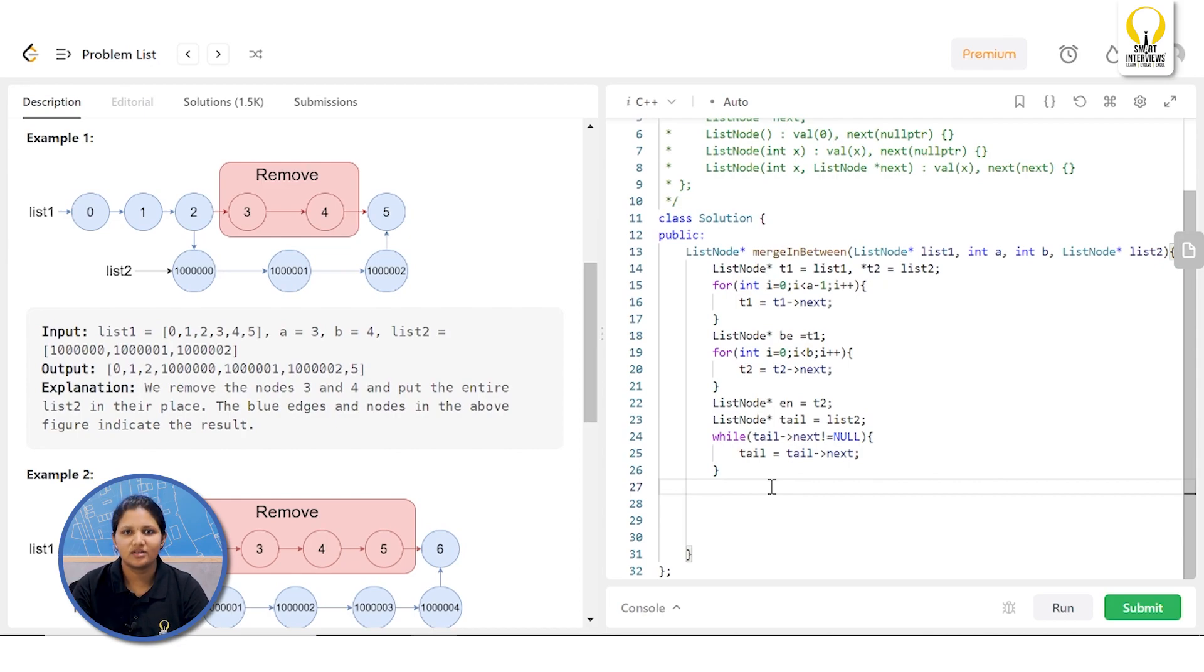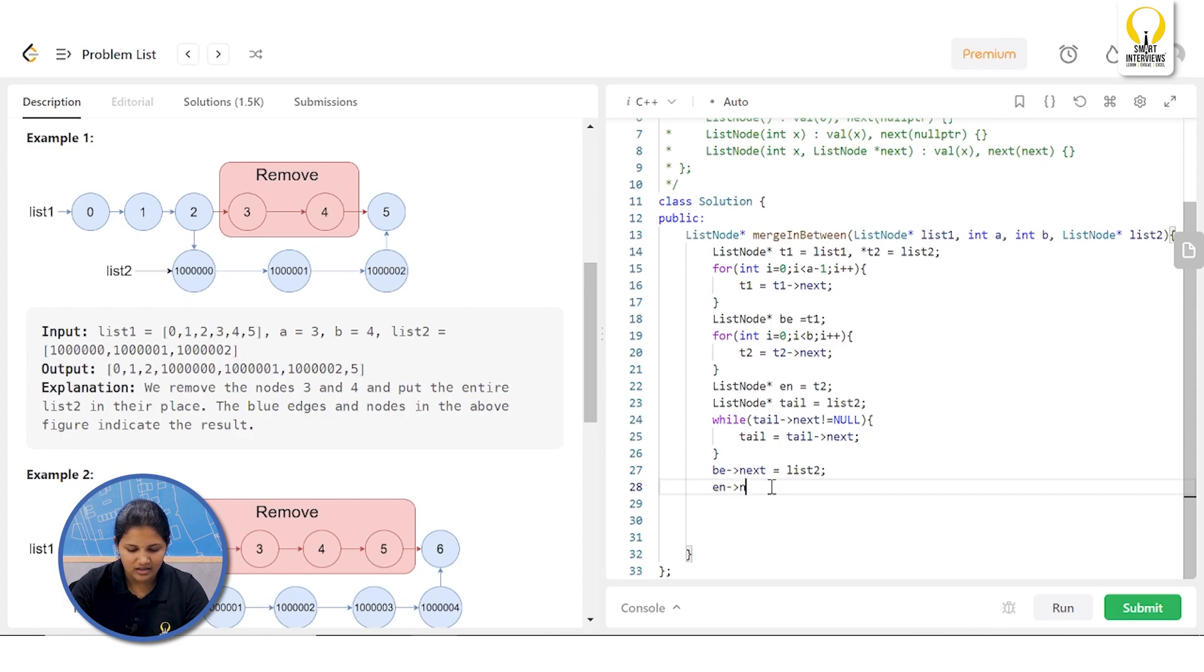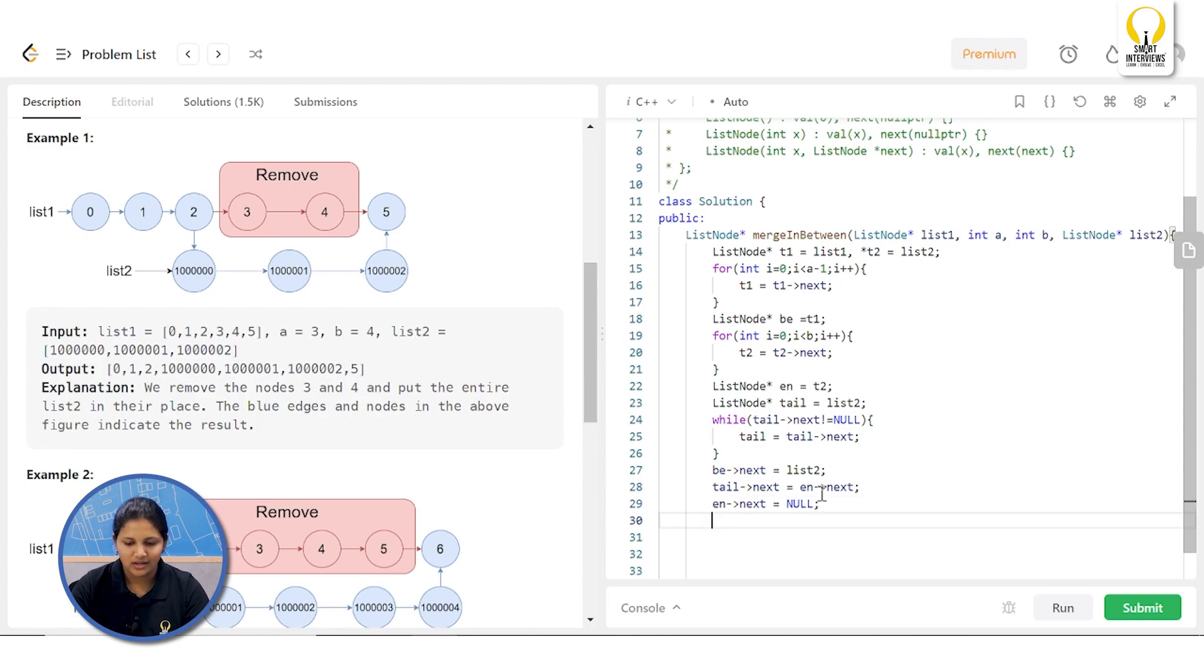Now, you have your beginning, ending and tail pointer. Can you tell me what is the next step? Simple. B.next will be connected to your list two and your tail.next will be connected to en.next and this will help you make the connections. But one more thing is that what is it? You need to break the connection between 4 and 5. How will we do it? By writing en.next is equals to null. Can you tell me what should be written at last? We need to return our list one. So, yeah, that's it. Let's try to run and see.